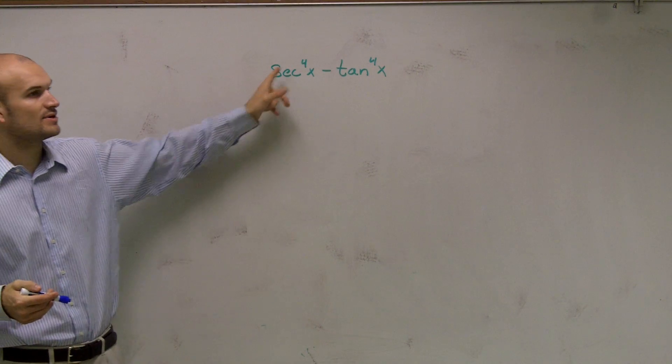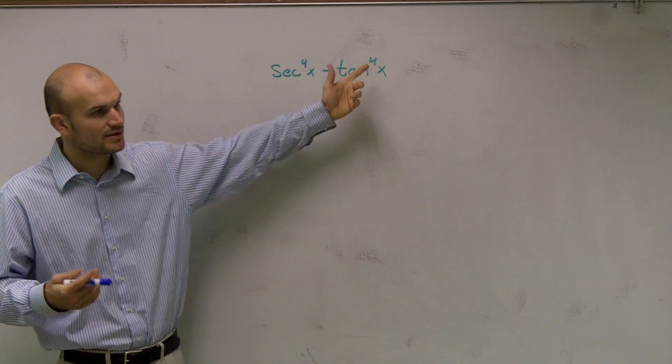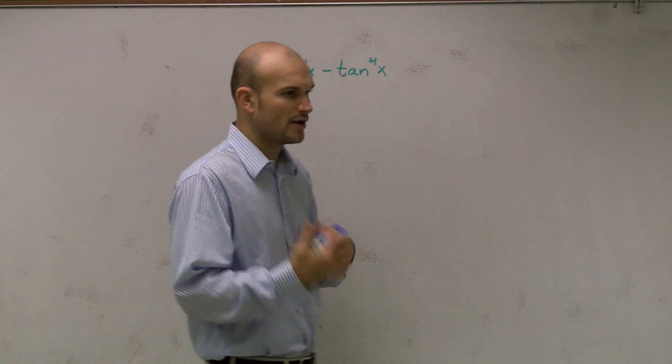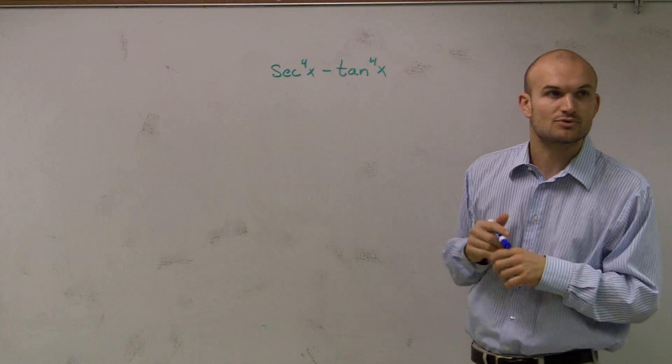Now I could say secant squared times secant squared obviously give me secant to the fourth, and tan squared to tan squared would give me tan to the fourth. But when I worked it that way, I wasn't really getting anything that was going to help me subtract these two.